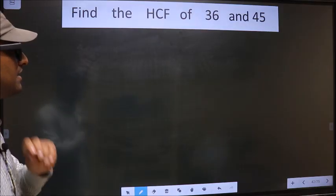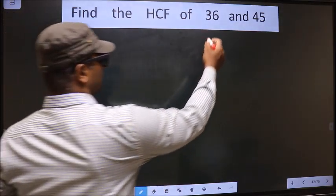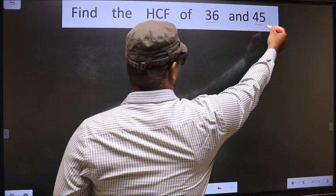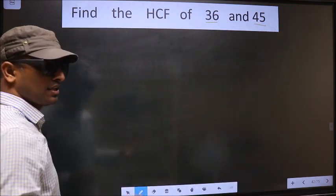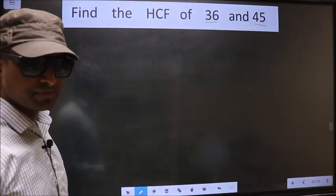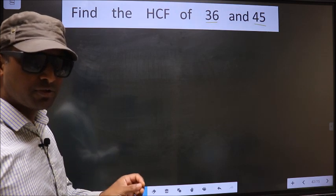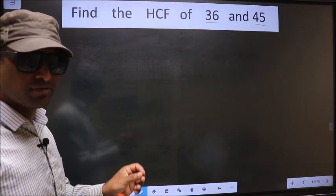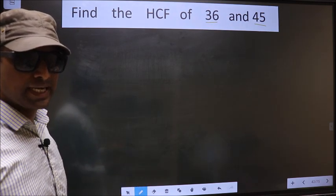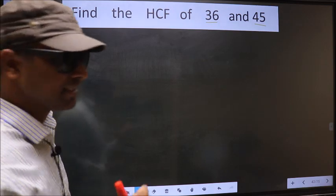Find the HCF of 36 and 45. To find the HCF, first we should do the prime factorization of each number separately.